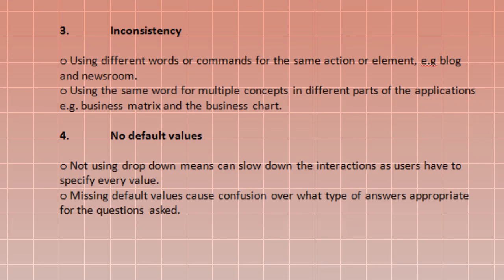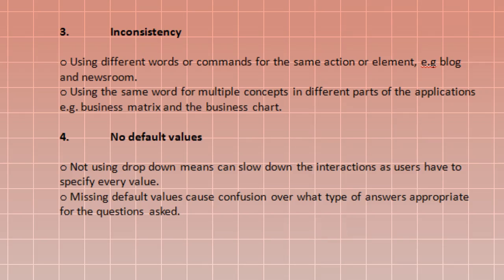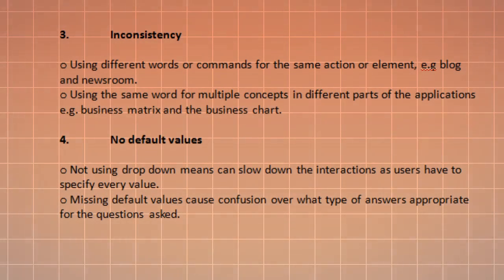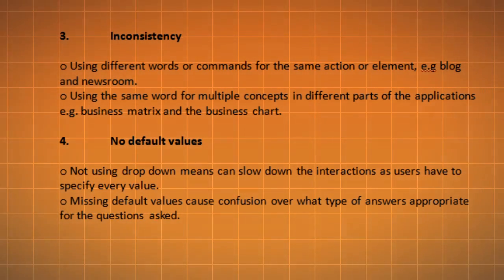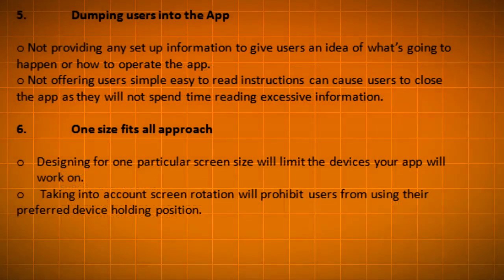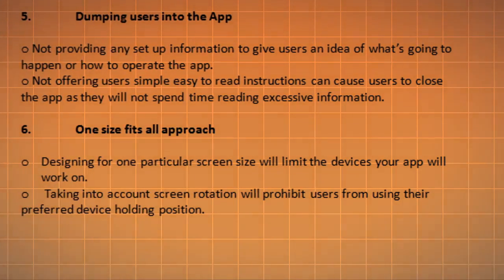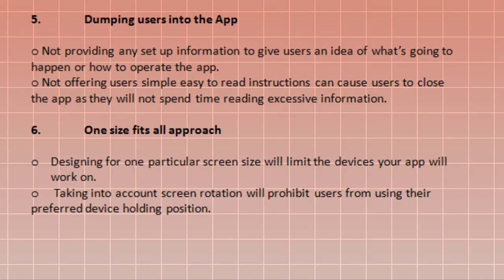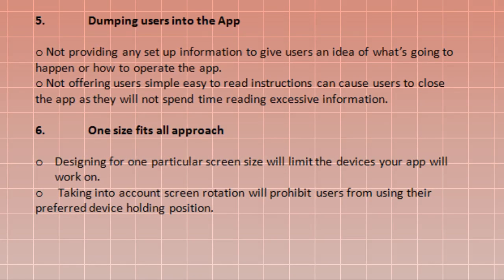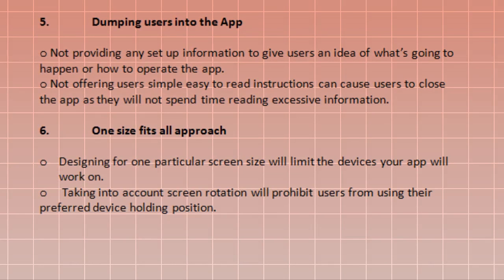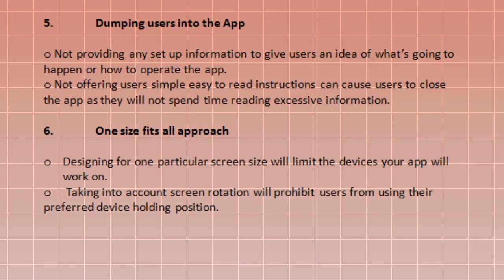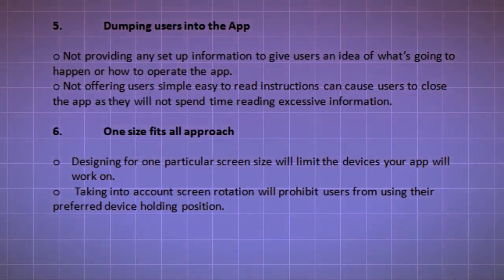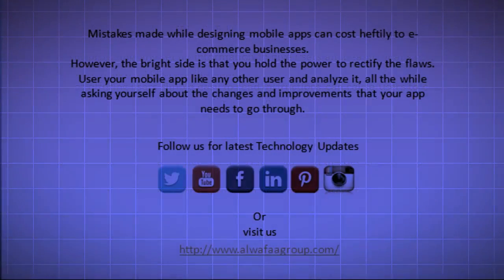Using the same word for multiple concepts in different parts of the application, for example 'business matrix' and 'business chart.' Fourth, no default values — not using dropdown menus can slow down interactions as users have to specify every value. Missing default values cause confusion over what type of answer is appropriate for the question asked. Fifth, dumping users into the app — not providing any setup information to give users an idea of what's going to happen or how to operate the app. Not offering users simple, easy-to-read instructions can cause users to close the app, as they will not spend time reading excessive information. Sixth, one size fits all approach — designing for one particular screen size will limit the devices your app will work on. Taking into account screen rotation will prohibit users from using their preferred device holding position.